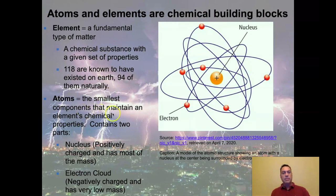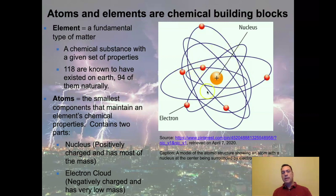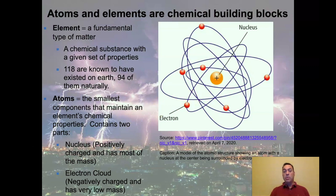An atom is the smallest component that maintains an element's chemical properties. It contains two parts: a nucleus and an electron cloud. The nucleus is positively charged, and the electron cloud surrounding it is negatively charged. Opposites attract, so the electrons are attracted to the nucleus while also trying to avoid each other because they all share the same negative charge. They buzz around the nucleus almost like flies in a complicated way.